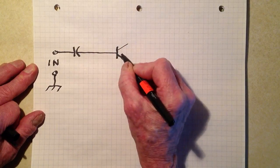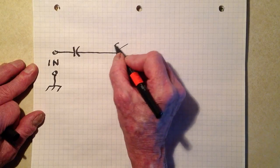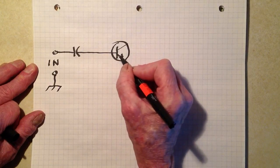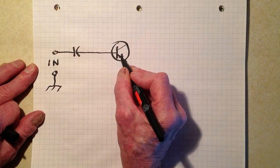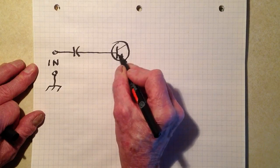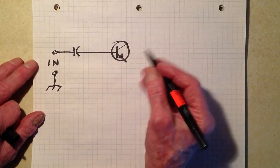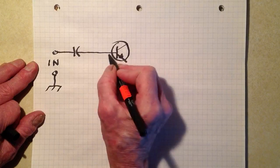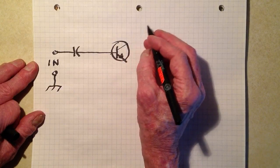So here we have the NPN bipolar transistor. Does that look like an arrow pointing out? So I'm doing my best there. This is the emitter, the base, and the collector.